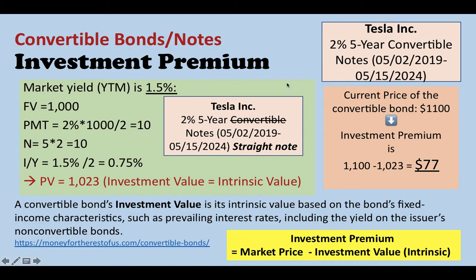In this video I'm talking about investment premium for convertible bonds or convertible notes. Let's see an example: Tesla in May 2019 issued a 2%, 5-year convertible note.